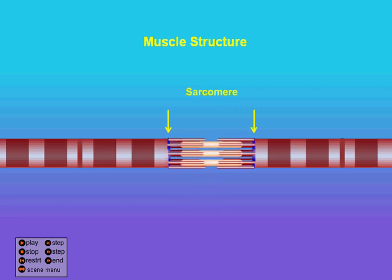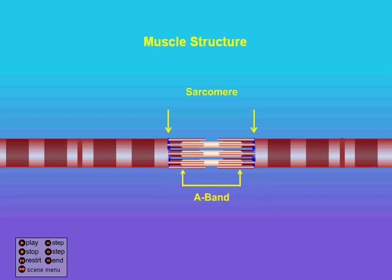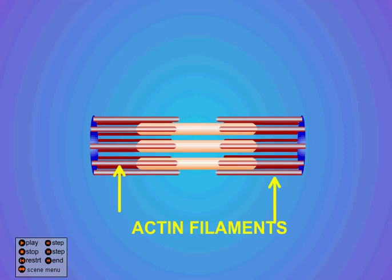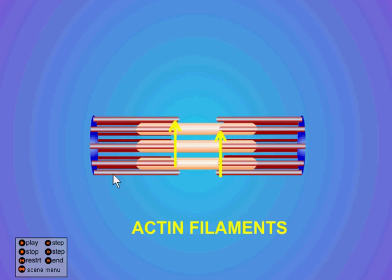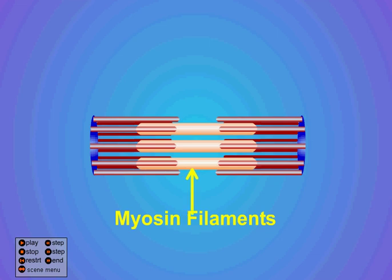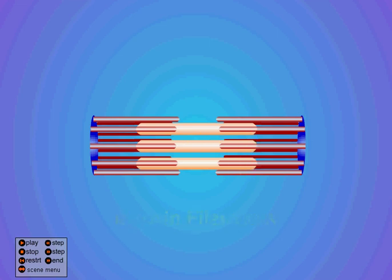You can see that when a sarcomere contracts, the Z-bands would get closer together. Also in the middle is an H-zone. The H-zone is actually where there's only myosin. So you've got your actin filaments, as you can see there, and myosin in the middle. The H-zone is that bit in the middle where there's no actin and myosin being crossed over.